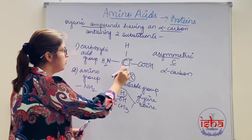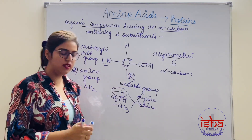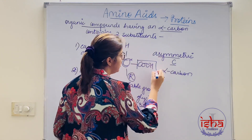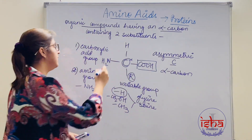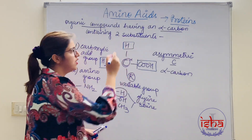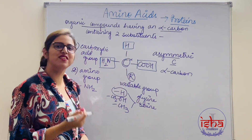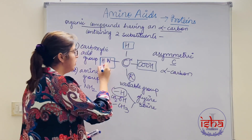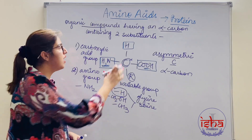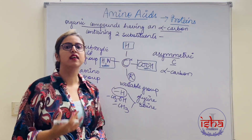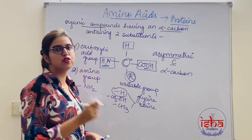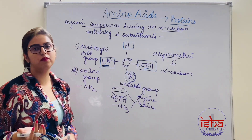So it is the R group that determines what amino acid we are talking about. The alpha carbon has two major fixed functional groups: the COOH group and the NH2 group. The hydrogen is also present but is not considered a functional group — it is there to satisfy the valency of carbon.